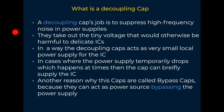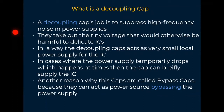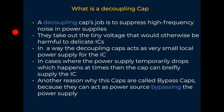So basically, what's the function of this decoupling capacitor? The decoupling capacitor has a job that is to suppress high frequency noise in power supplies. Its function is to suppress high frequency spikes, which would otherwise be harmful to some ICs. So we need a way to suppress them. The decoupling caps also act like small local power supplies for the IC.